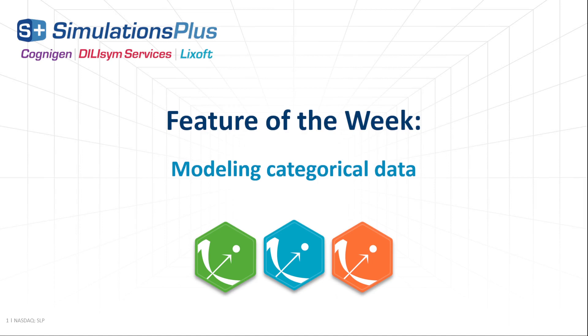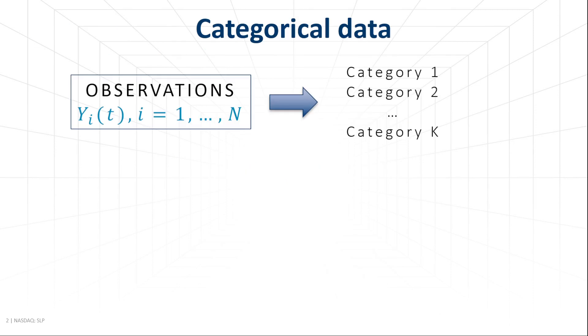Hello. Today's feature of the week video is about modeling categorical data. In this type of data, the observations for each individual at every time point take values in a fixed and finite set of categories.